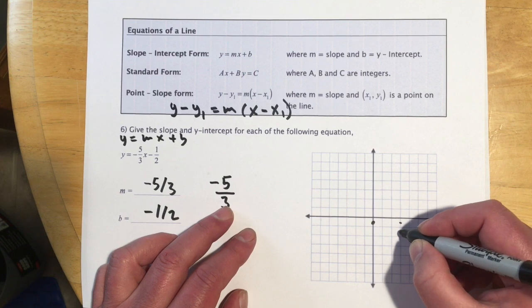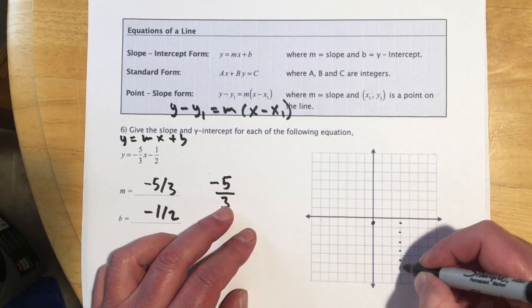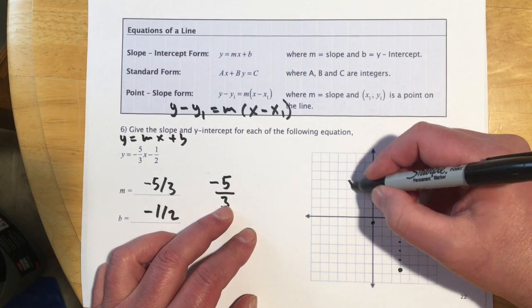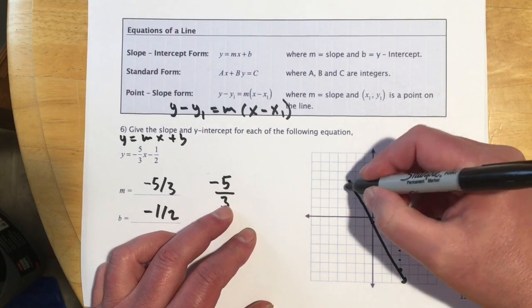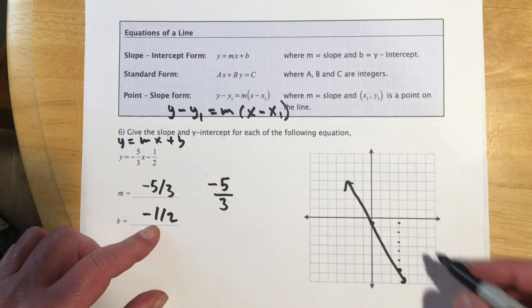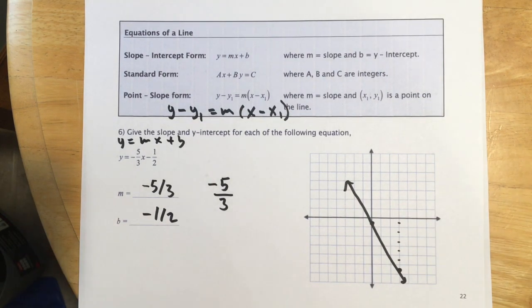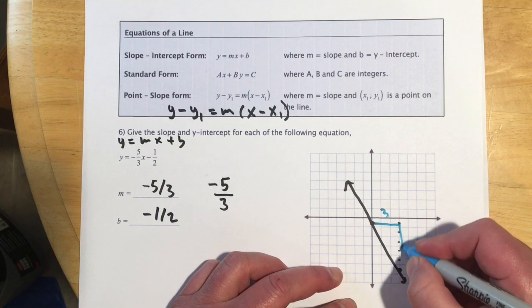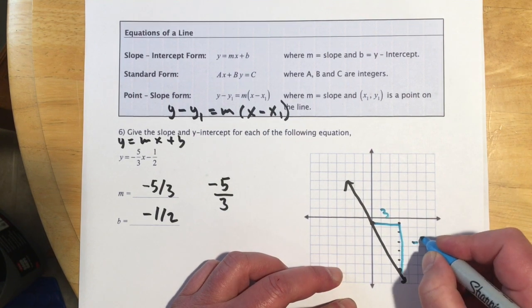So there's 0, so that's 1, 2, 3, 4, 5. And that would be our graph. So I'm just starting on the negative 1 half, because that's my intercept. And I'm going right 3, and down 5.